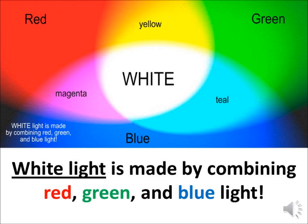There are several other places where you can see this happening — at concerts, lights that shine on a stage. If you're a performer or a dancer, you can look up at the lights, and if the red, green, and blue lights are on, you actually will have white light shining on the stage. The most important thing here is that white light is made by combining red, green, and blue light.